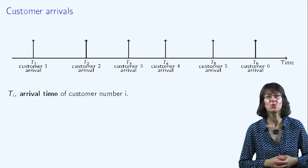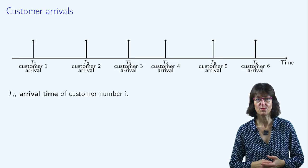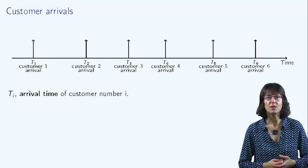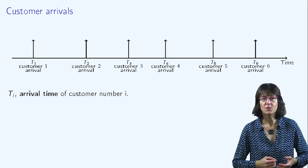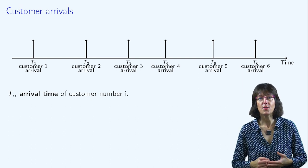Let's go back to the characterization of customer arrivals. The arrival process is a point process, meaning a set of points on the timeline. Each point, denoted as Ti on this graph, represents the arrival time of customer number i.